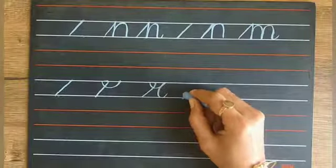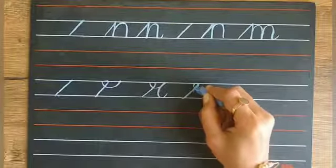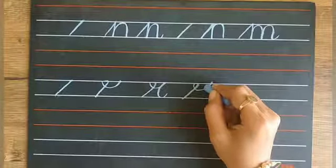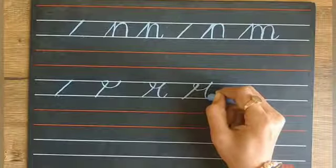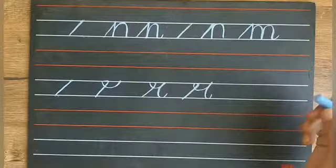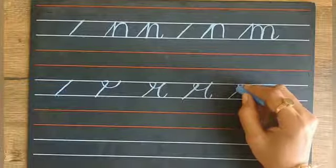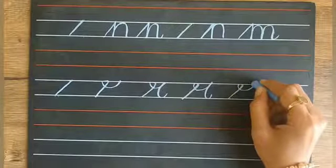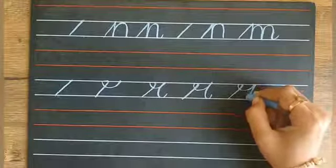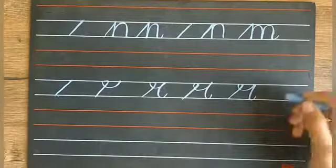Once again, we will write. Make a slanting line. Take a loop from here, touch the upper blue line. And from here, make a curve and make a tail. Make a slanting line, make a loop, touch the upper blue line. From here, make a curve, then make a tail. This is letter R.